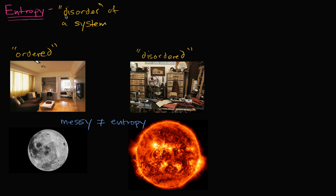To think about what disorder means in the entropy sense, we're going to have to flex our visualization muscles a little bit more, but hopefully it'll all sink in. Entropy — this type of disorder — is more about the number of states that a system can take on.